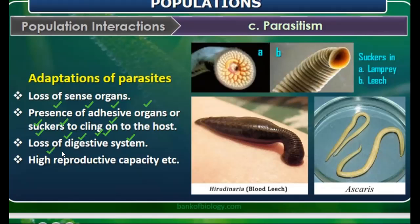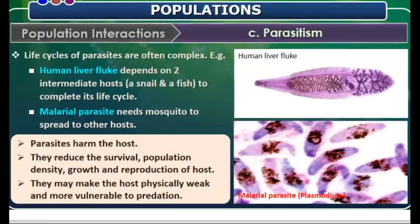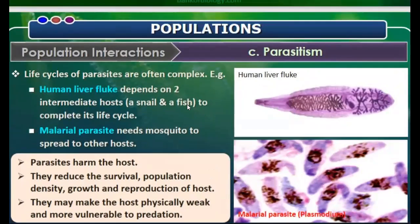All parasites have high reproductive capability. Whether they reproduce asexually or sexually, they have a very high reproductive capacity. Next, the life cycle of parasites is often complex. For example, the human liver fluke depends on two intermediate hosts — a snail and a fish — to complete its life cycle.